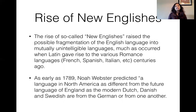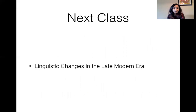In 1789, Noah Webster predicted that the language of North America was going to be very different — that American English was going to be very different from the standard variety of British English or any other variety of English that existed at that point. I will see you in the next video on linguistic changes in the Late Modern English era.